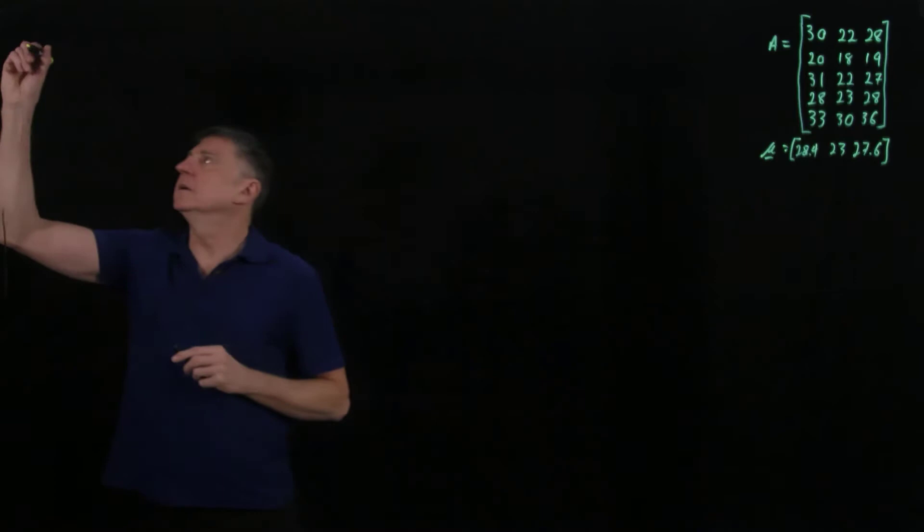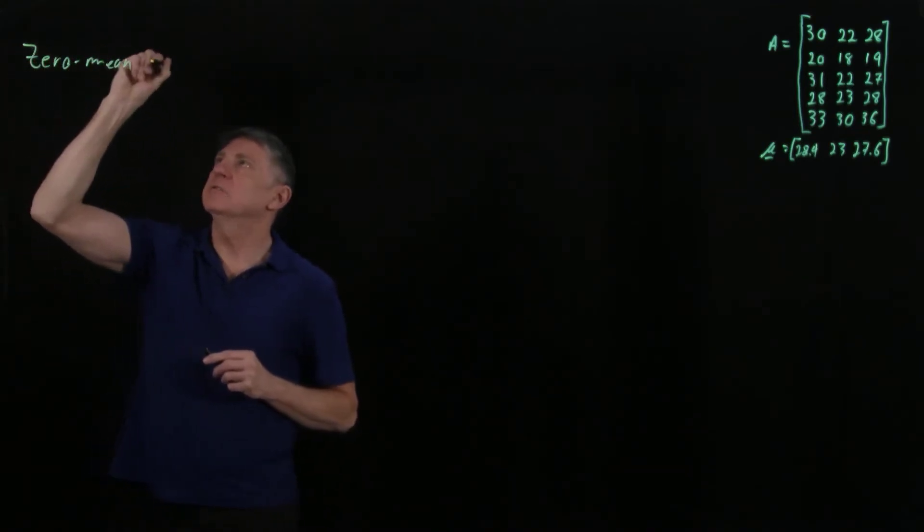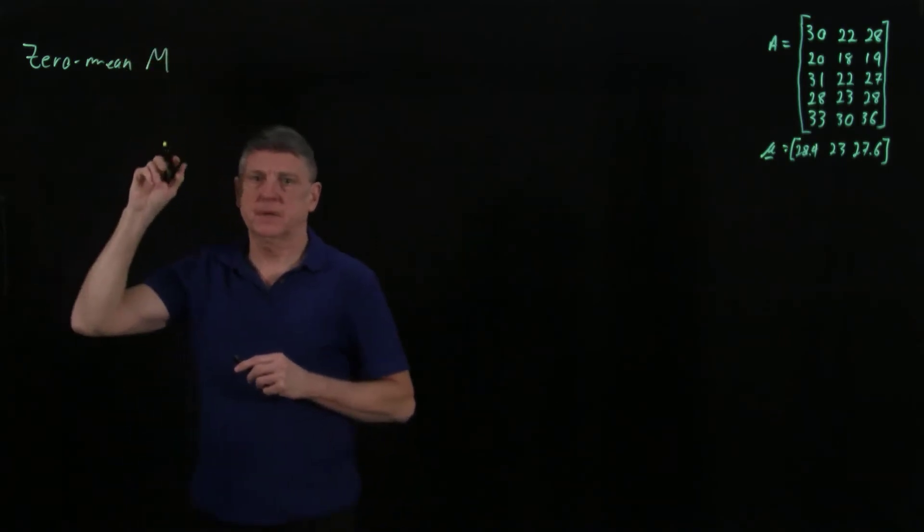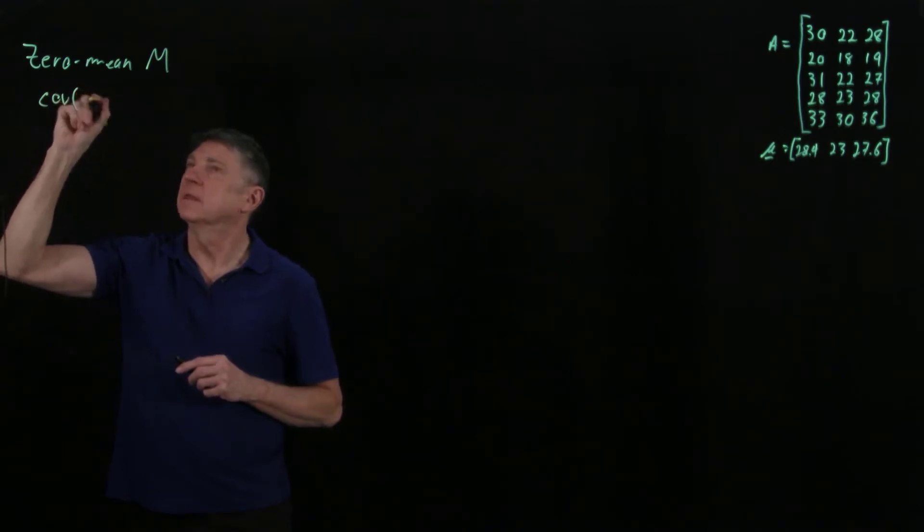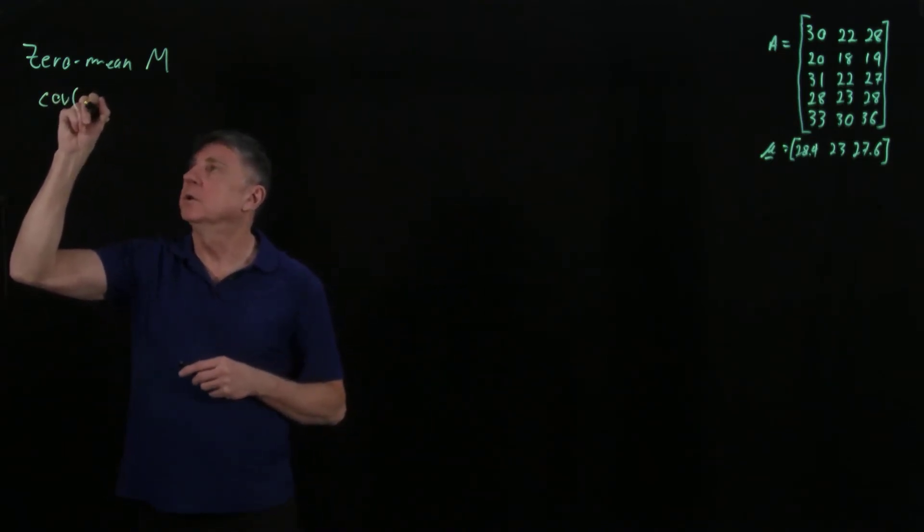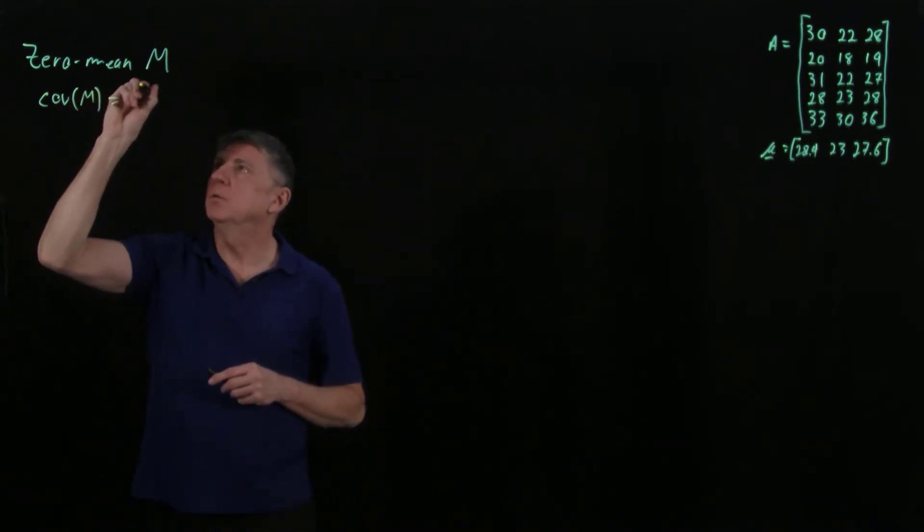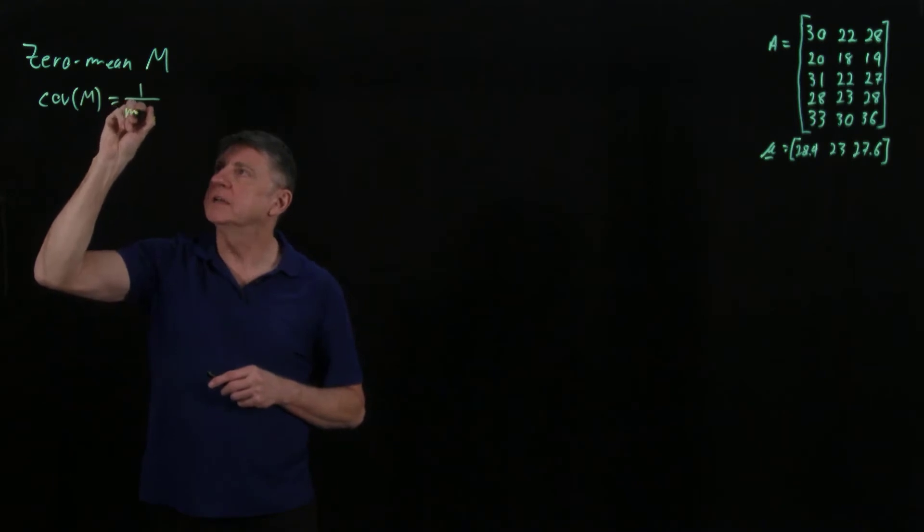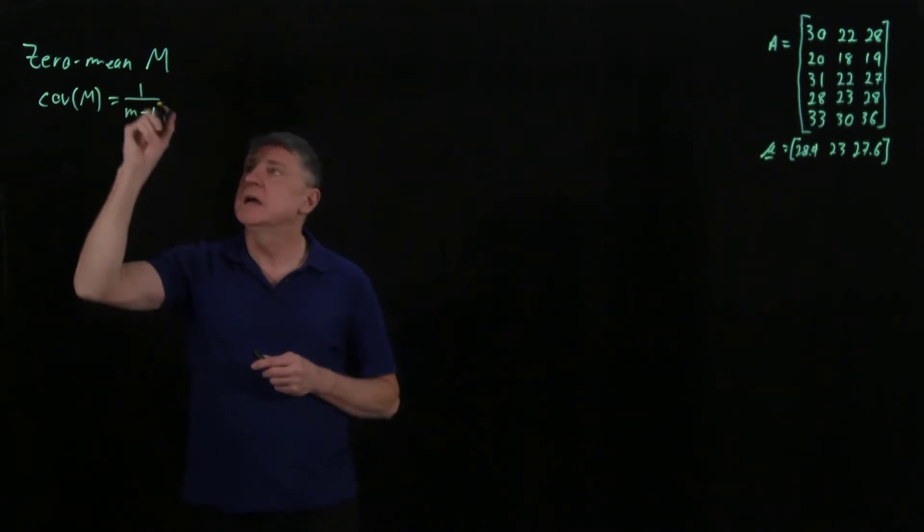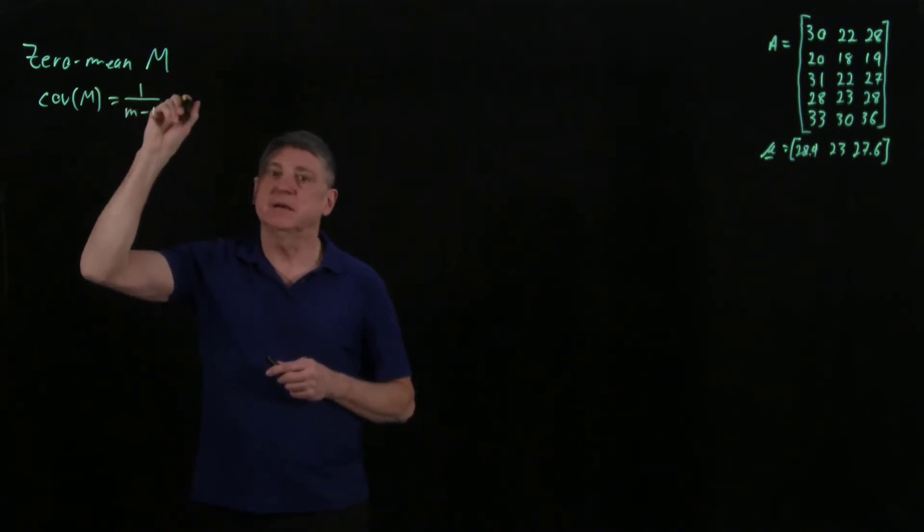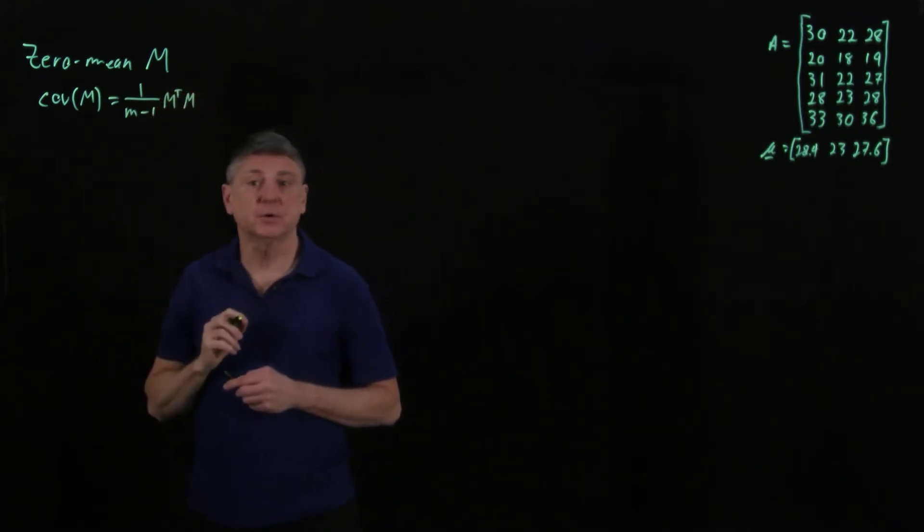For a zero mean matrix M, the covariance of the original data - we'll write the covariance matrix as 1 over the number of rows minus 1 to calculate the sample covariance. That scalar is multiplied by M transpose M, which gives us the covariance.